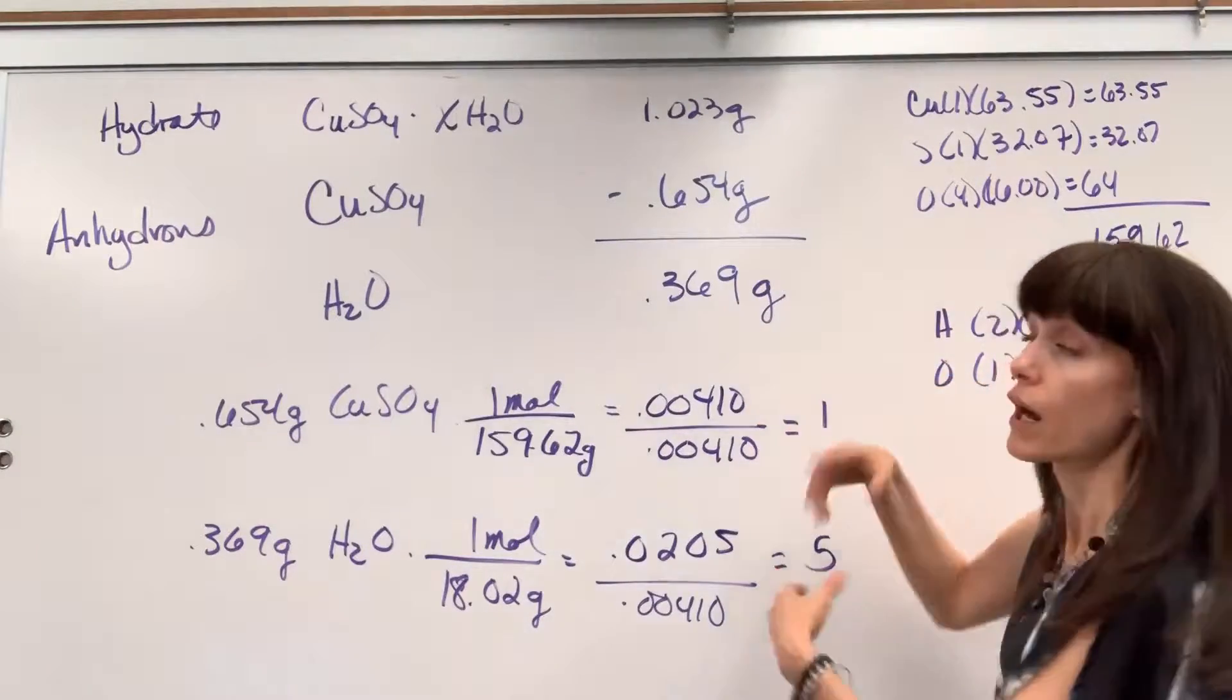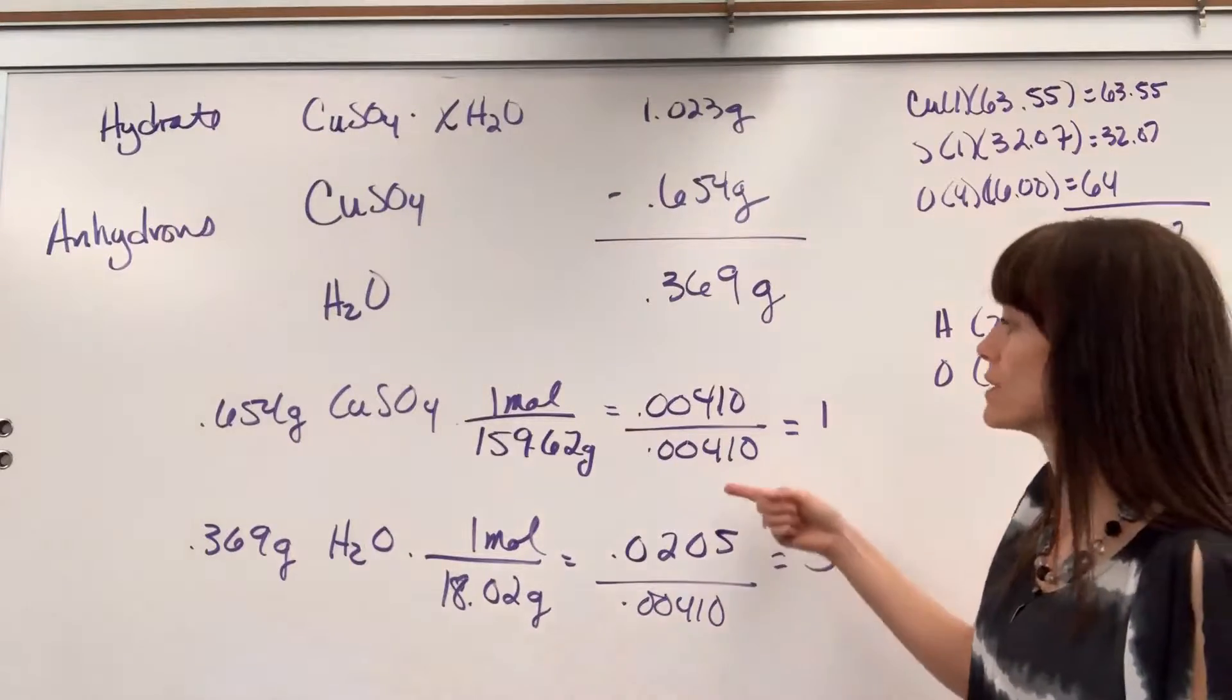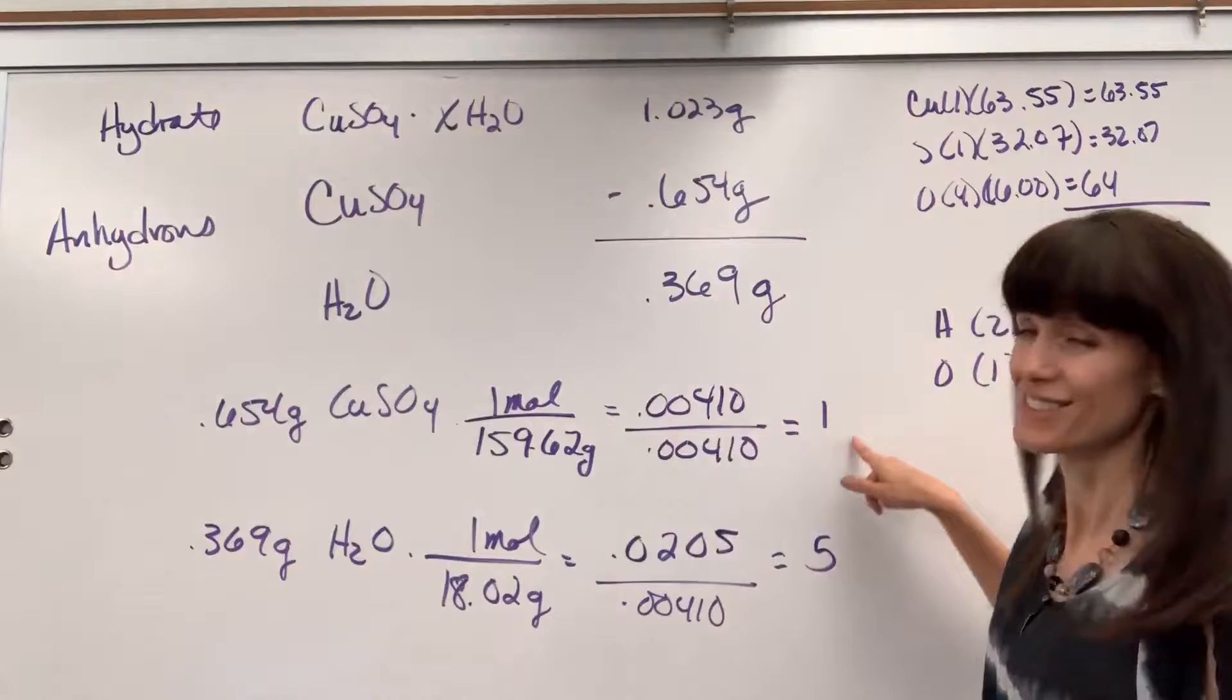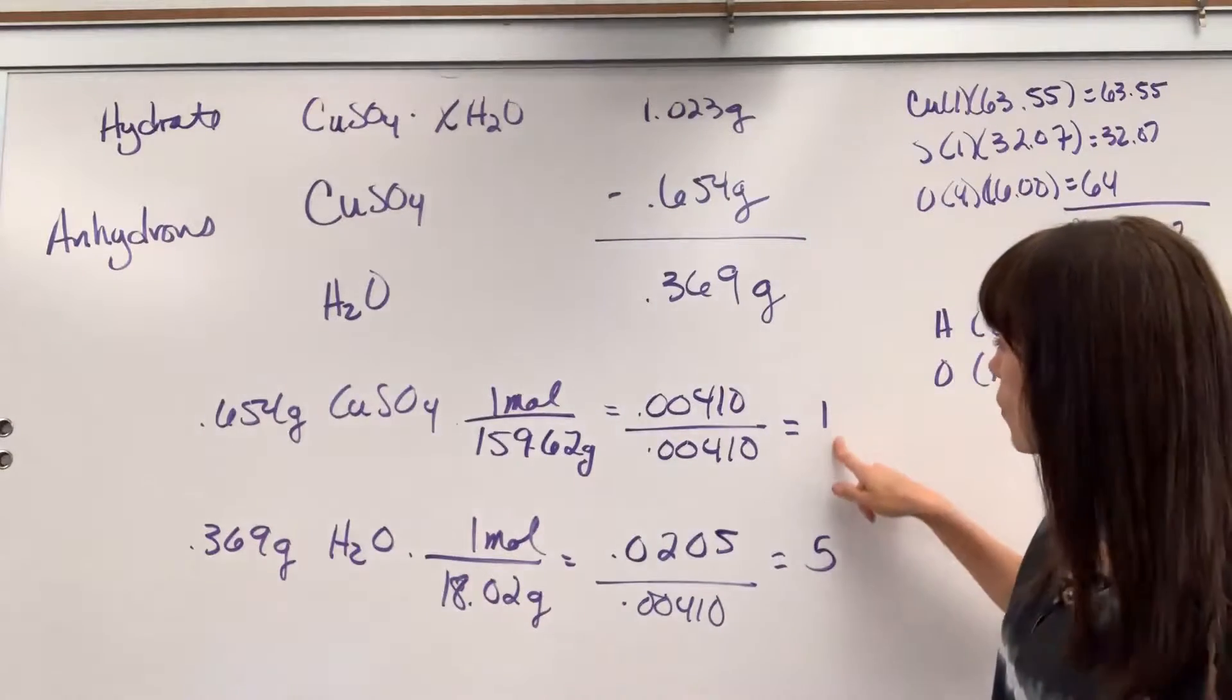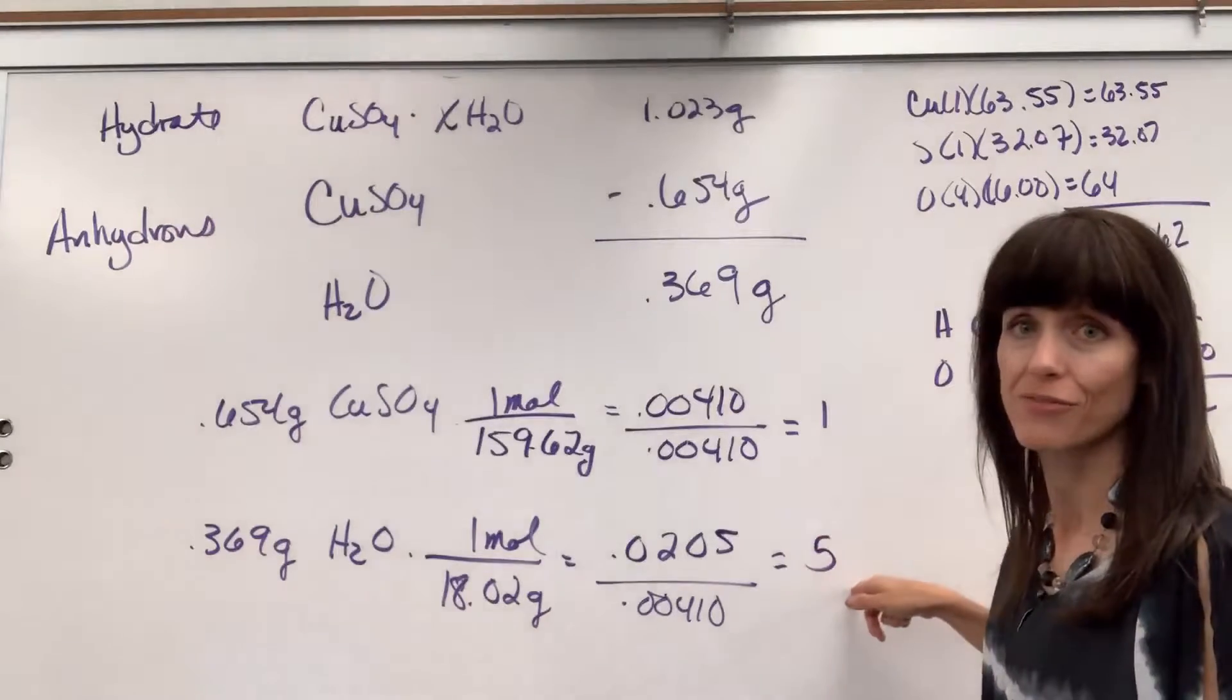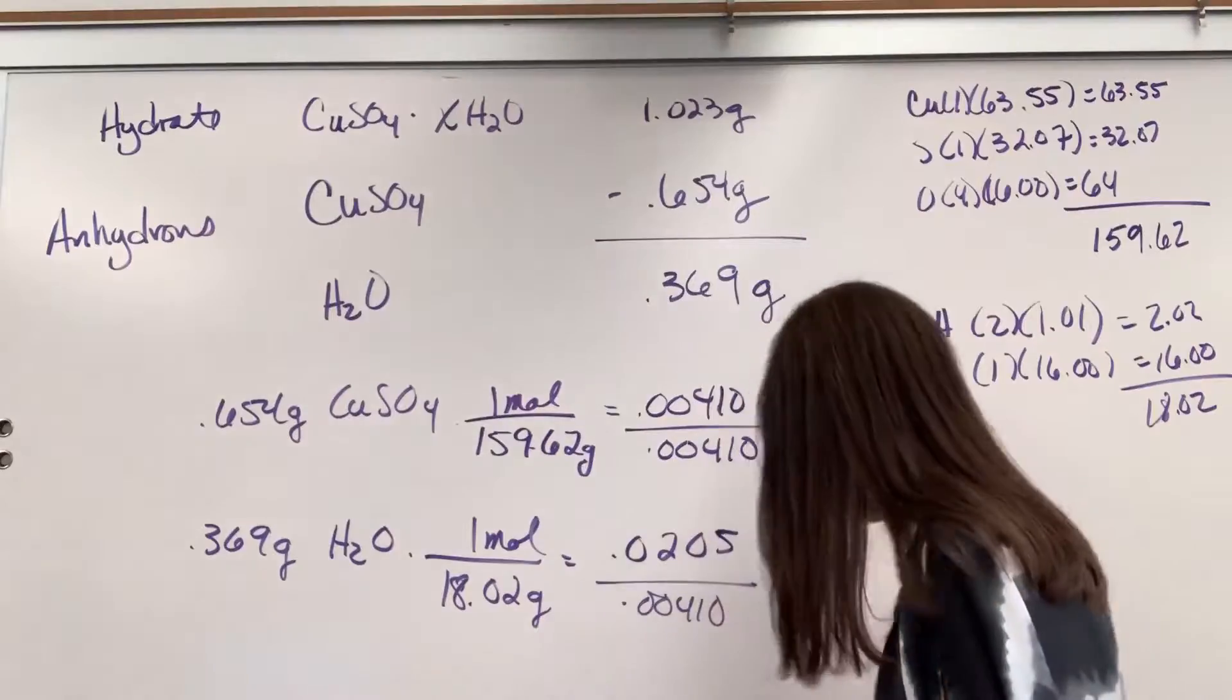Now there's your molar ratios, but they're not whole numbers, it's kind of a mess. Our trick to get the smallest whole number: you just divide by the smallest mole, which is 0.0041. So divide, divide, and check it out. One mole of copper 2 sulfate traps five moles of water. There is your X.